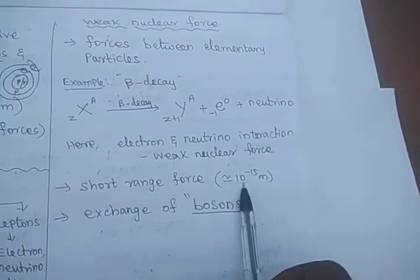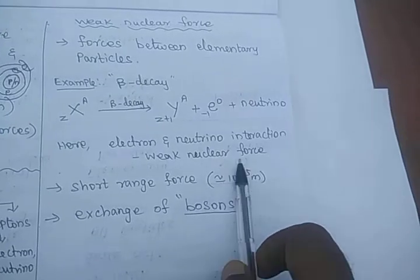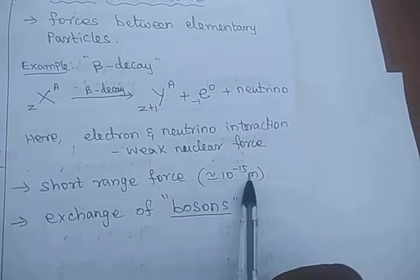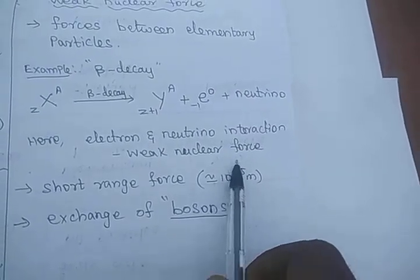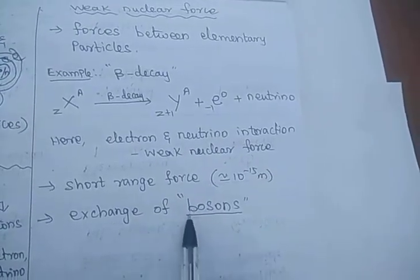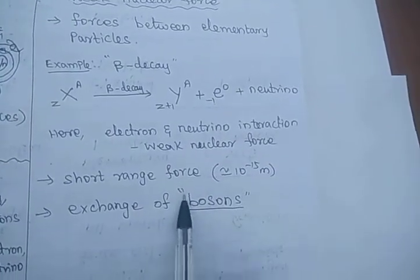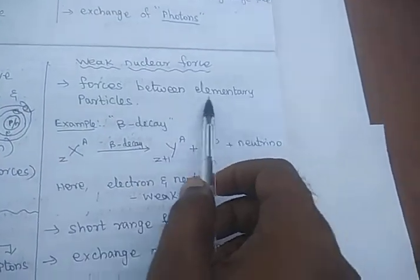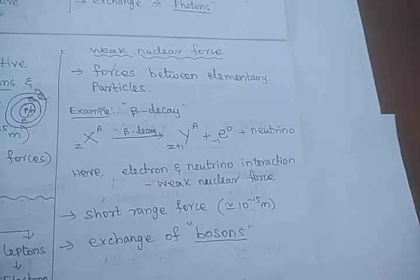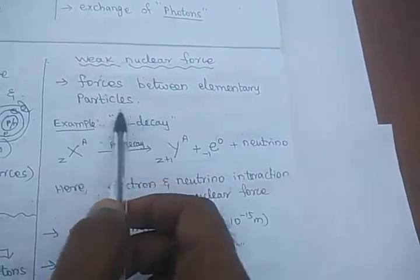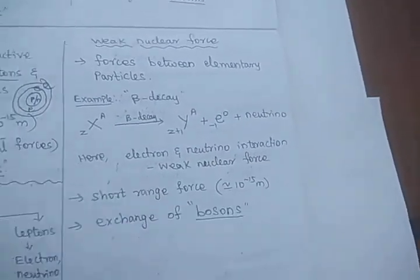The weak nuclear force is also a short-range force, around 10 to the power of minus 15 meters — which is the size of the nucleus. These forces occur because of the exchange of bosons. So the weak nuclear force is due to elementary particles. You may have some doubt: what are elementary particles?